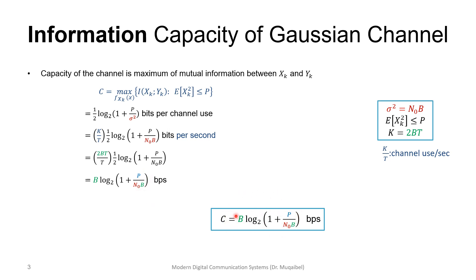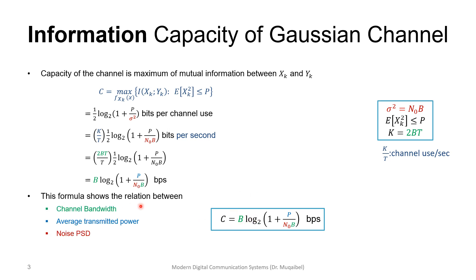This is the capacity of a Gaussian channel expressed in terms of bandwidth B (shown in green), average transmitted power P, and noise power spectral density N₀. This is a very important equation — please remember it and know the assumptions: it applies specifically to a Gaussian channel.